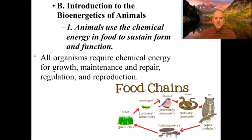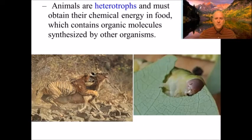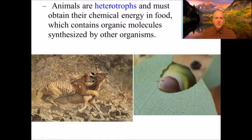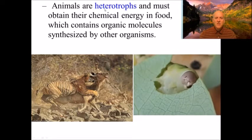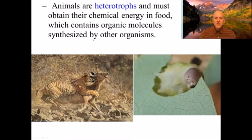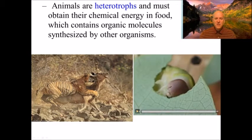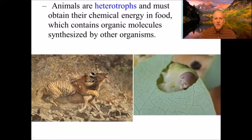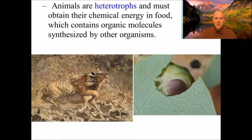Bioenergetics: animals use chemical energy in food to sustain their form and function. All organisms require chemical energy for growth, maintenance and repair, regulation, and reproduction. Just sitting at your desk you're using energy — burning calories. Your heart beating, your breathing, keeping your body temperature at the right level all require energy. Animals are heterotrophs, meaning they must eat; they get their chemical energy from food containing organic molecules synthesized by other organisms, whether plant or animal.